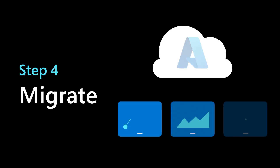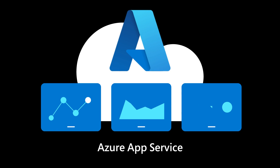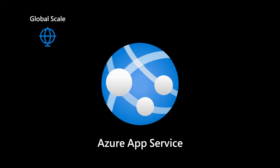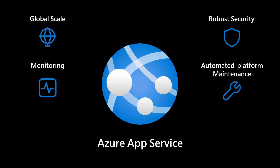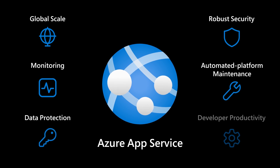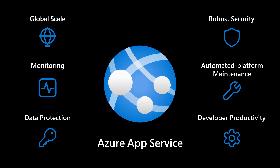Step 4: Migrate your applications to App Service in Azure. App Service provides global scale, robust security, monitoring, and automatic platform maintenance for your migrated apps, ensuring optimal performance and safeguarding your data while boosting developer productivity.